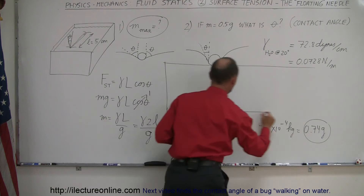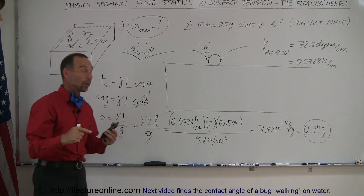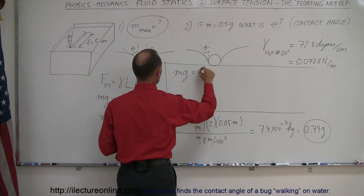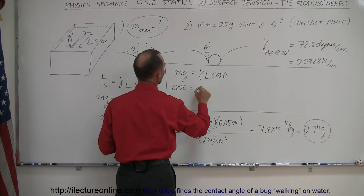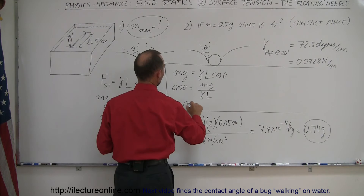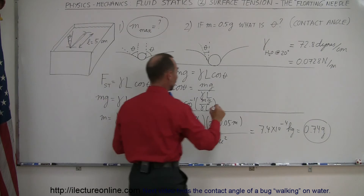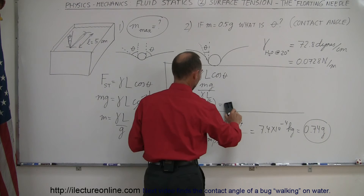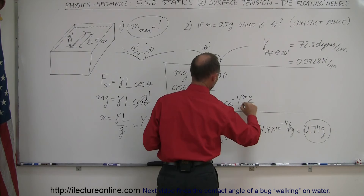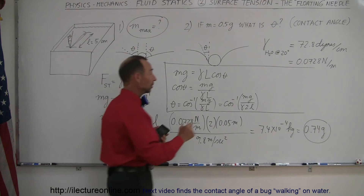Using the same equation, mg equals gamma times L times cosine of theta. Solving for theta: cosine of theta equals mg divided by gamma times L, which means theta equals the arccosine of mg divided by gamma times L. Remember L is the total contact length between the liquid and the needle — both sides of the needle — so this becomes the arccosine of mg divided by gamma times 2 times the length of the needle, where small L represents the length of the needle.